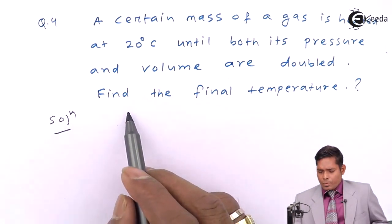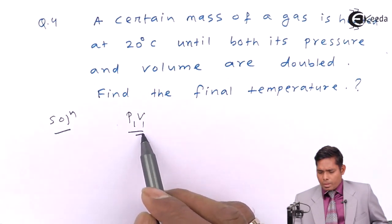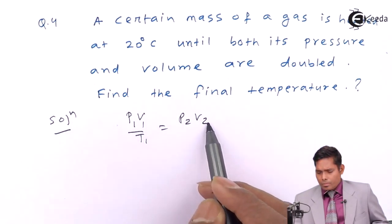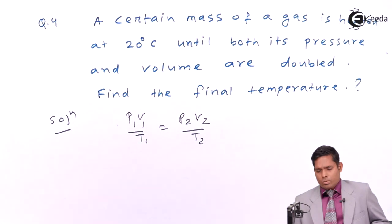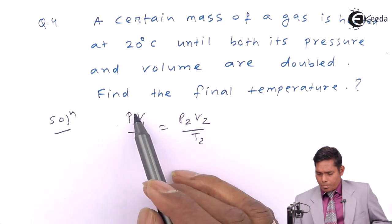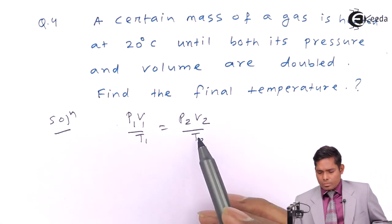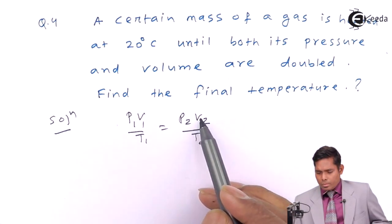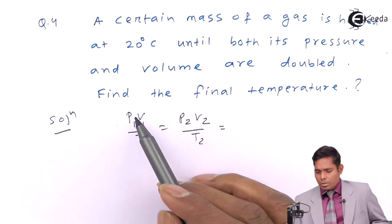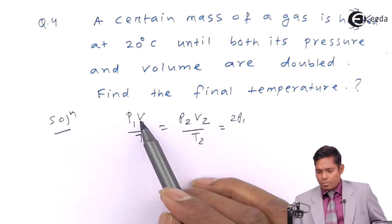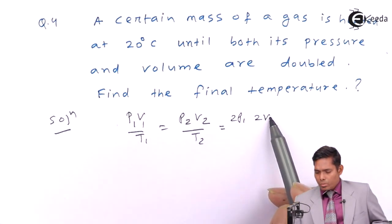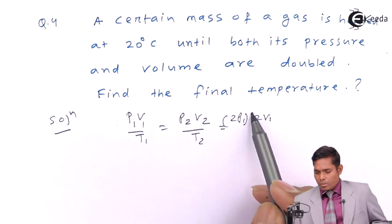We will use the gas equation, that is P1V1 by T1 equals P2V2 by T2. Now the pressure becomes double, the volume becomes double. So I can write that the pressure is double of this P1, this is 2P1, volume is double 2V1. This is what you have to put.